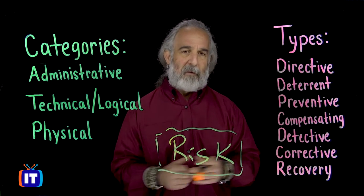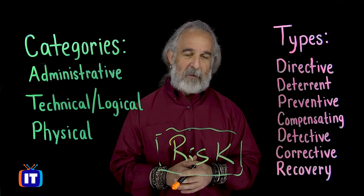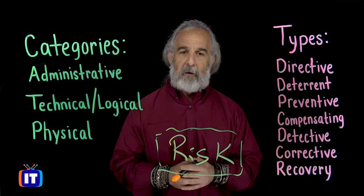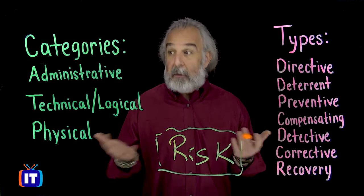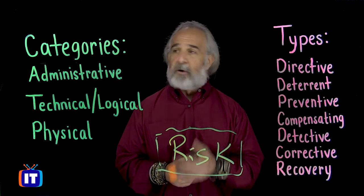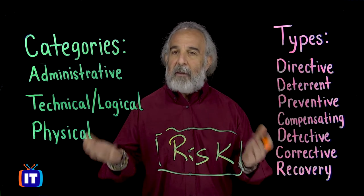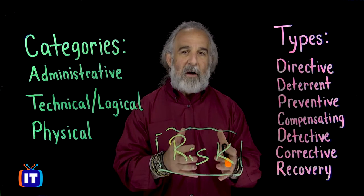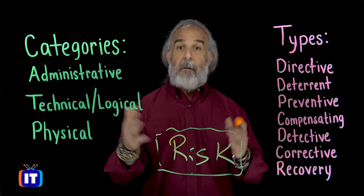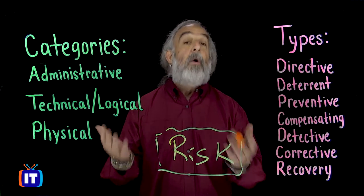Finally, as a category, physical controls — I often refer to these as the guards, guns, and gates conversation. These are controls that manifest themselves in the physical world. We can touch them, feel them, interact with them. They are literally guards, guns, gates, and a variety of other physical measures like doors, windows, and closed-circuit TV monitoring that allow us to understand and constrain our environment.